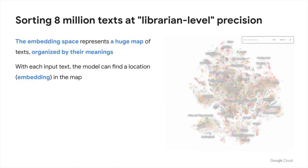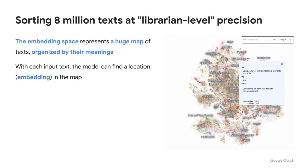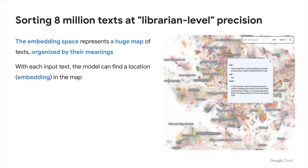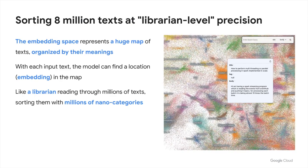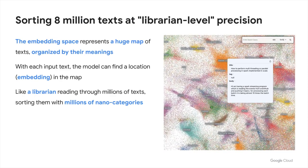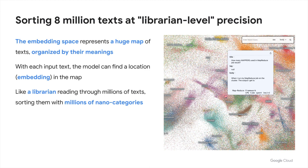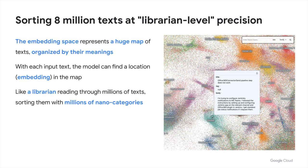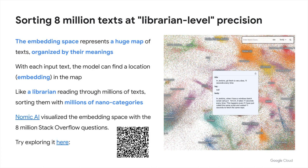Vertex AI Embeddings for Text has an embedding space with 768 dimensions. The space represents a huge map of a wide variety of texts in the world, organized by their meanings. With each input text, the model can find a location — an embedding — in the map. The API can take 3,072 input tokens, so it can digest the overall meaning of a long text or even programming code and represent it as a single embedding. It's like having a librarian knowledgeable about a wide variety of industries, reading through millions of texts carefully and sorting them with millions of nano-categories that can classify even slight differences of subtle nuances.